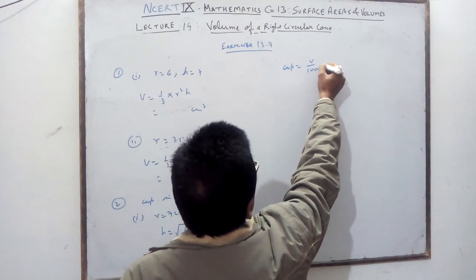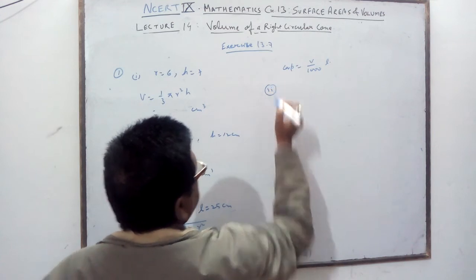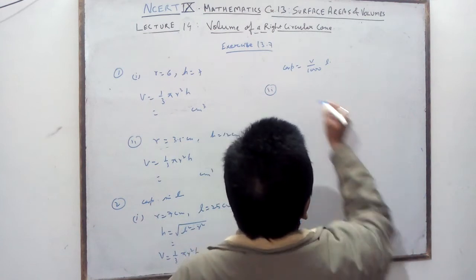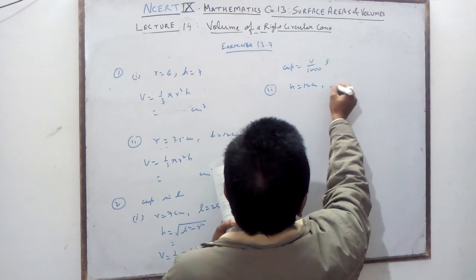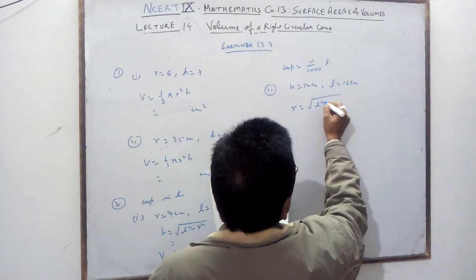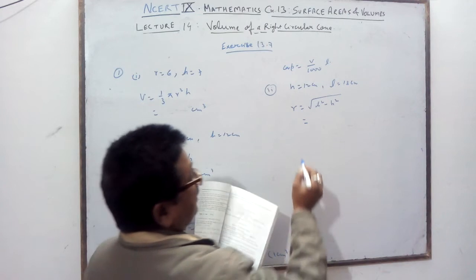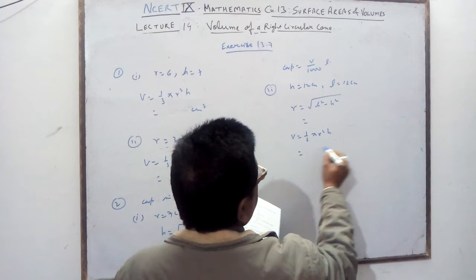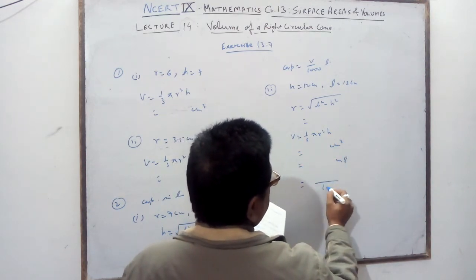Second part of question 2: height = 12 cm and slant height = 13 cm. Find radius using r = √(l² - h²), then calculate volume = (1/3)πr²h. The answer in cubic centimeters equals milliliters, so divide by 1000 to get the capacity in liters.